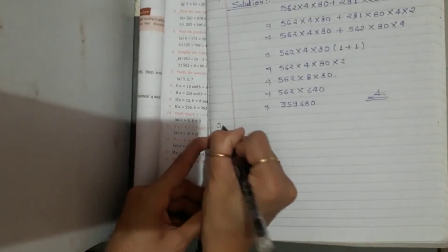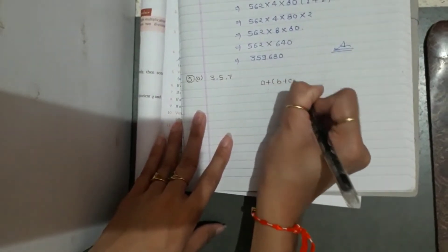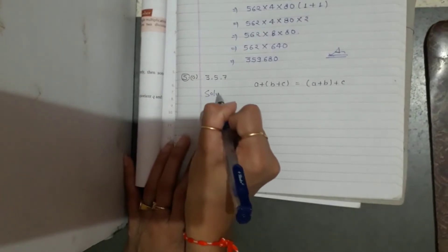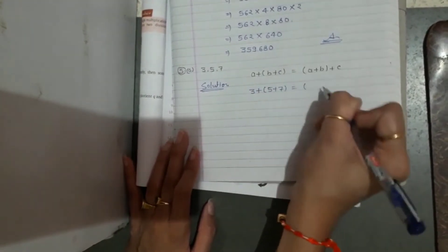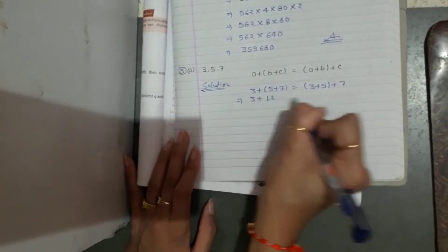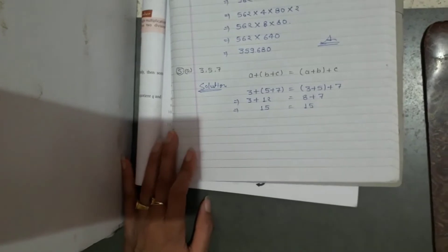Question 5: verify the associative property of addition for the following numbers. We use the associative property for addition, which states: A plus (B plus C) equals (A plus B) plus C. For part (a): A is 3, B is 5, C is 7. LHS: 3 plus (5 plus 7) equals 3 plus 12 equals 15. RHS: (3 plus 5) plus 7 equals 8 plus 7 equals 15. LHS equals RHS, verified.